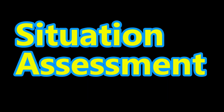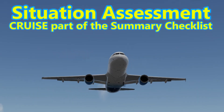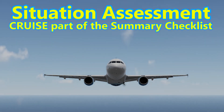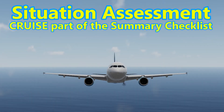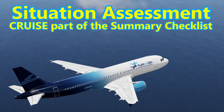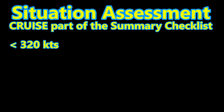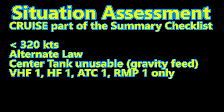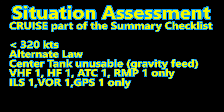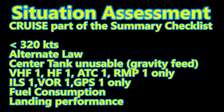Next is situation assessment. The pilot monitoring takes out the QRH and looks at the cruise part of the summary checklist to decide where to land. The cruise section reminds us to keep speed below 320 knots, that we are in alternate law, and that center tank fuel is unusable. It also reminds us of available communication equipment and NAV. We take into account landing performance and fuel to decide where to divert.